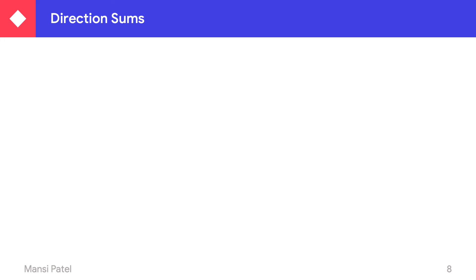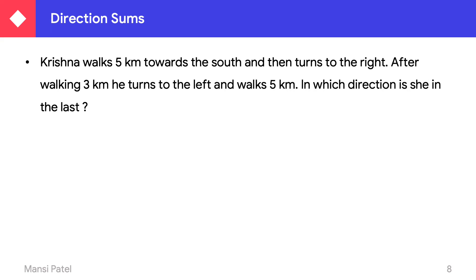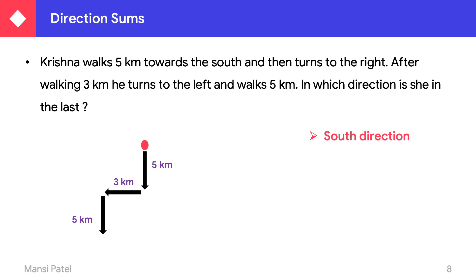Let us see another sum. Krishna walks 5 kilometers towards the South, then turns to the right and walks 3 kilometers, then turns to the left and walks 5 kilometers. In which direction is she now? If she starts her journey from a point, she walks 5 km South — south lies downward. When she reaches there, she turns right and walks 3 km. When she reaches there, she takes a left turn and walks 5 km. In the end, we can say she is still in the South direction.